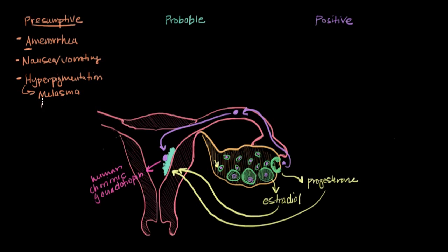Linea nigra is another manifestation of that hyperpigmentation. So linea means line and nigra means black. So it's a dark line that tends to appear down the middle of the abdomen. And also you can see darkening of the areola of the breasts. That's another manifestation of the hyperpigmentation.